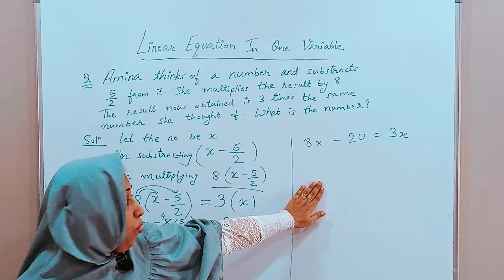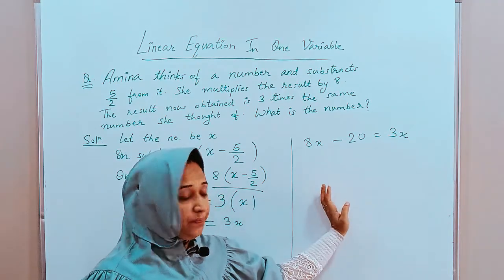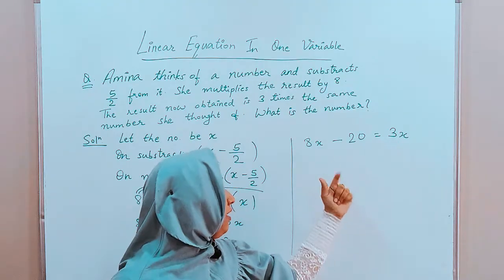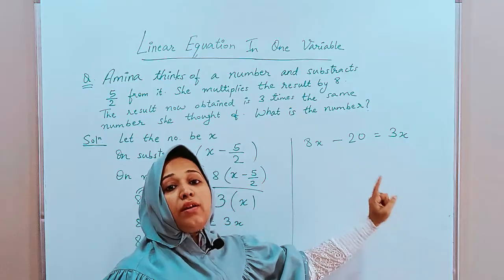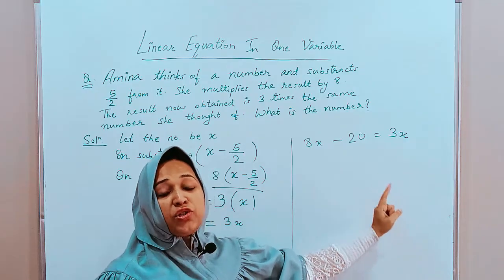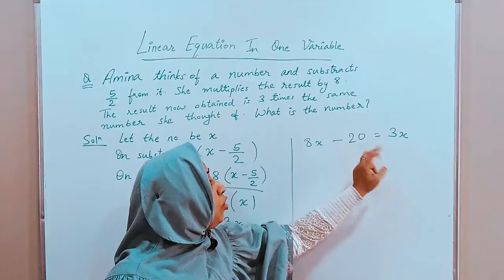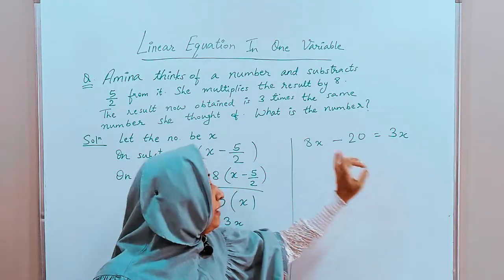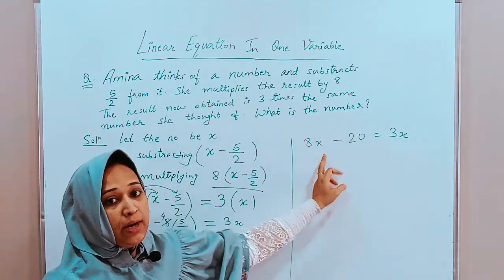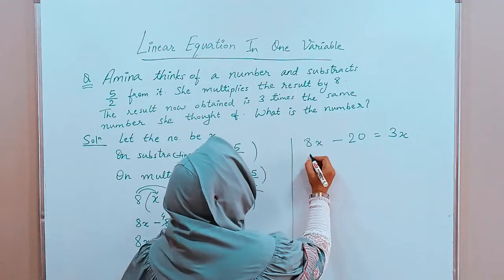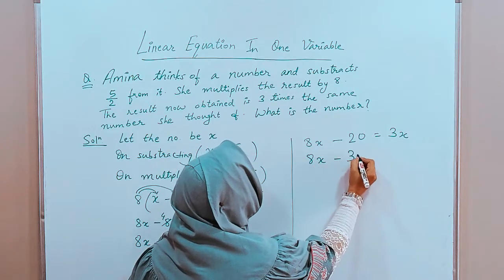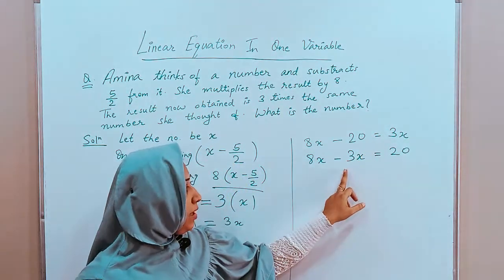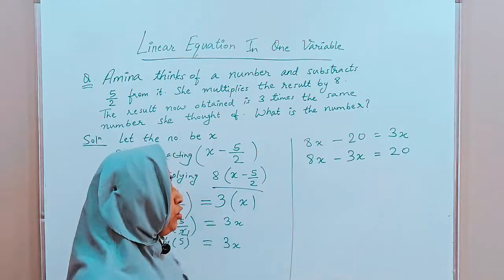Now, what we have to do? We have to shift variables on one side and constants on the other side. So, I will shift 3x on the left hand side and minus 20 on the right hand side. When transposing that is when shifting or we say when we make them jump over the equal to sign, the sign of the terms changes. It means plus will become minus and minus will become plus. So, 8x minus 3x is equal to 20. Plus 3 became minus 3, minus 20 became plus 20.